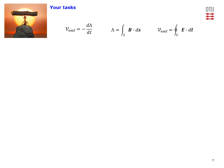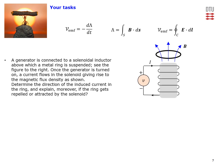We are now finished with this video problem. The main result is Faraday's law of induction: a changing magnetic flux or flux linkage induces an electromotive force. For the first practice task, we have a generator connected to a solenoidal inductor above which a metal ring is suspended. Once the generator is turned on, current in the solenoid gives rise to a magnetic flux density as shown.